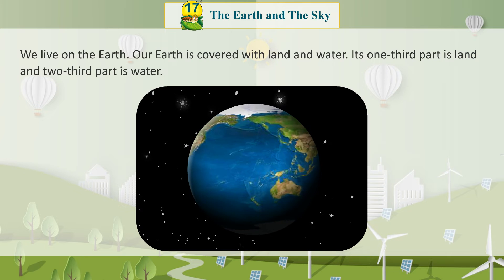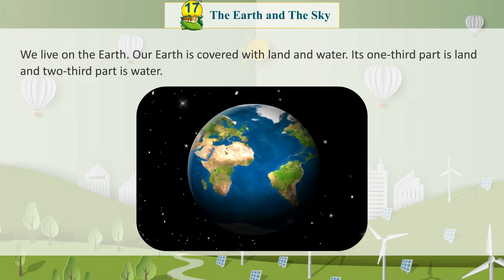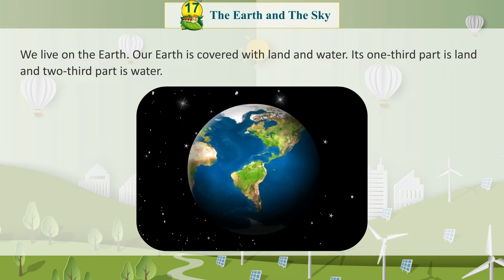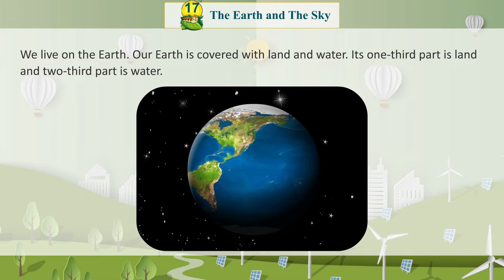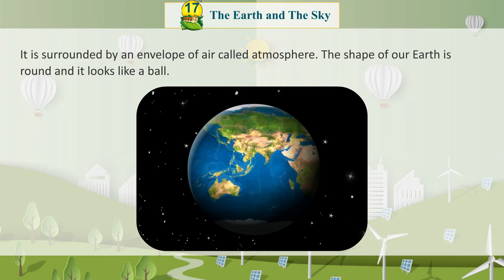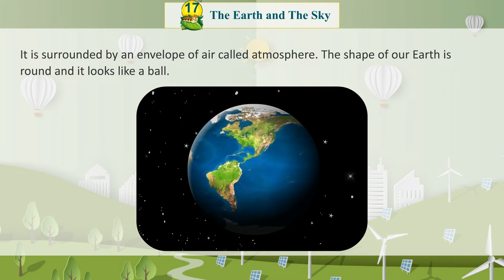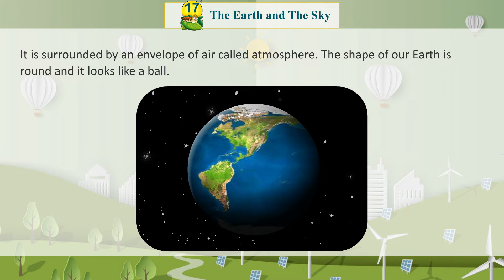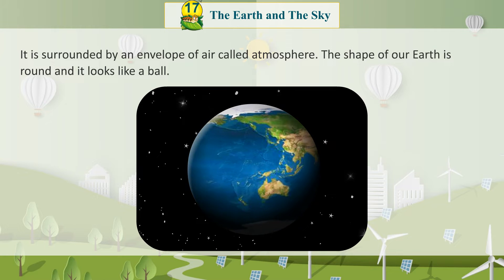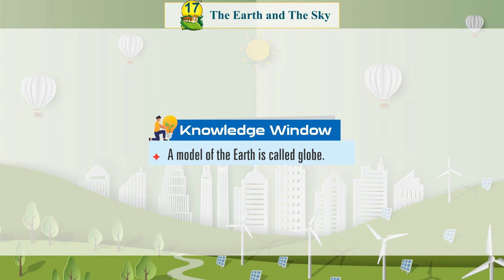We live on the earth. Our earth is covered with land and water. Its one-third part is land and two-thirds part is water. It is surrounded by an envelope of air called atmosphere. The shape of our earth is round and it looks like a ball. A model of the earth is called a globe.